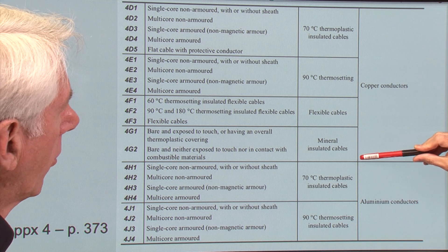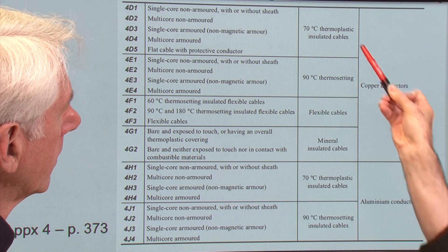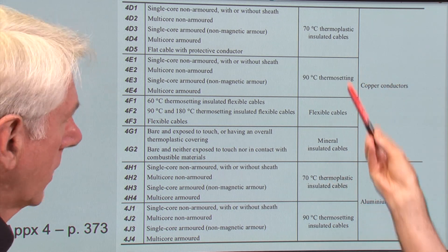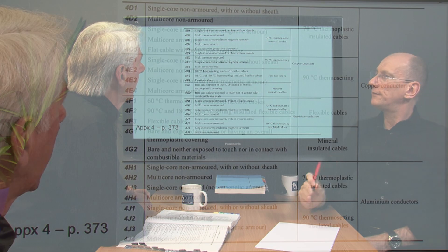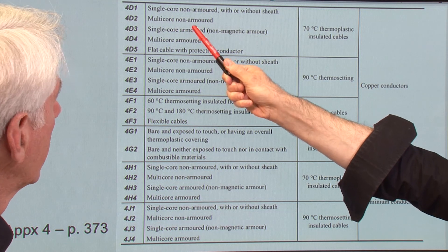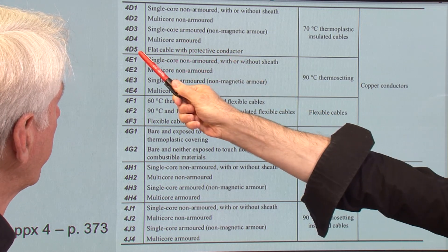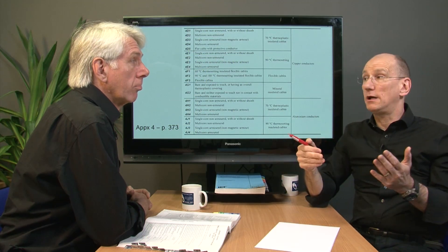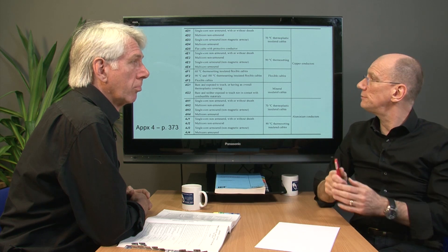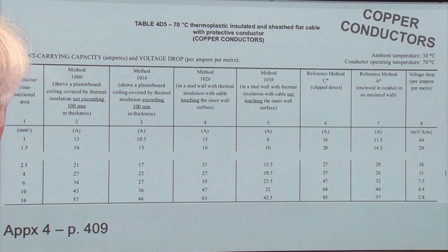We're not doing mineral insulated, we're not doing flexible. We've got a choice of thermosetting or thermoplastic, but from the question it was 70 degree thermoplastic. So we've eliminated those and we're concentrating on just a few options. It was flat twin, so we need to go to table 4D5. We can thumb through the pages, which can be quite time consuming, but if you've already been there we can turn straight to page 409. A useful tip is to put the page number on the flag tag so you can go straight to it.